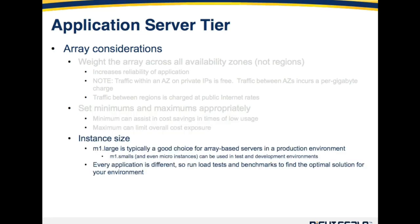What instance size should you use for servers within the array? RightScale has done quite a bit of testing and found that an M1 large — the AWS M1 large instance — is typically a good choice for array-based servers in production environments. You can always use M1 smalls and even the new T1 micro instances in test and development environments to save on infrastructure costs, but generally we recommend using an M1 large. With that said, every application is different, so we always recommend running load tests and benchmarks to find the optimal solution for your particular application and environment.